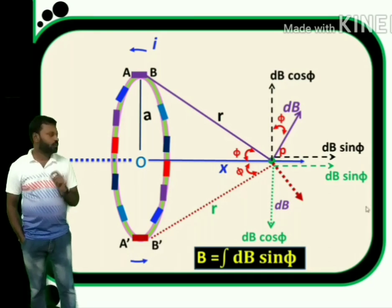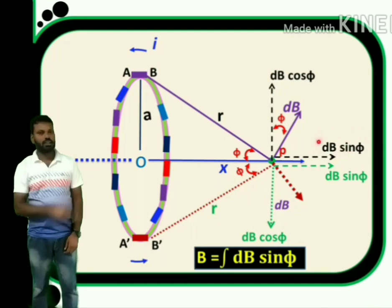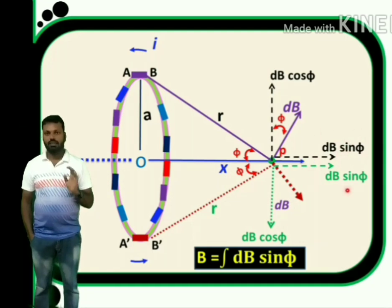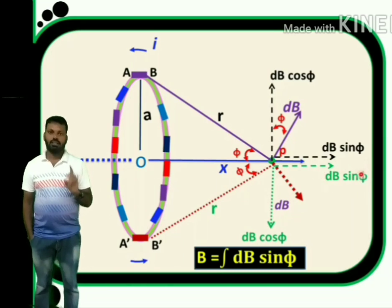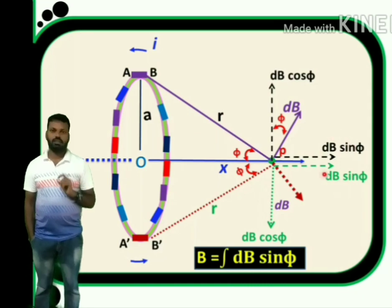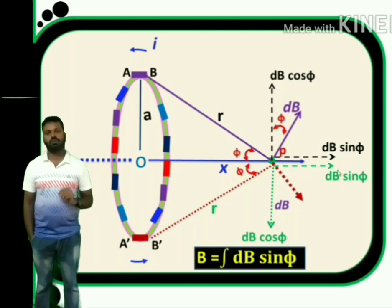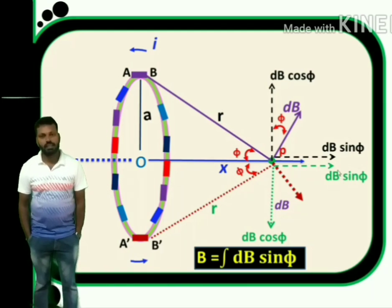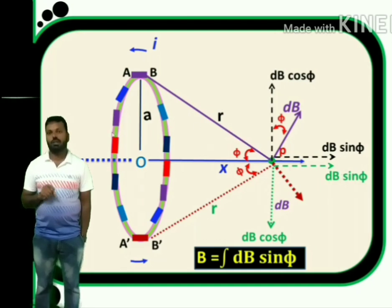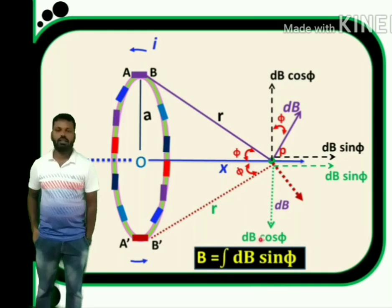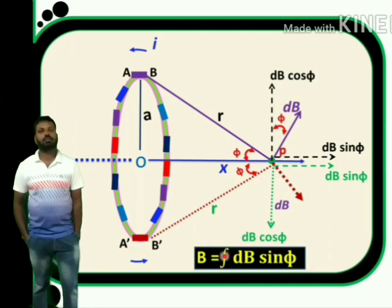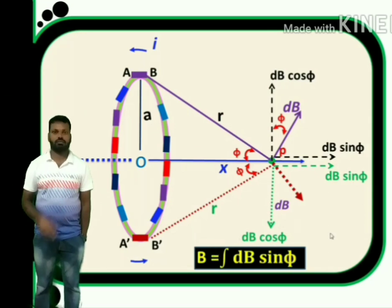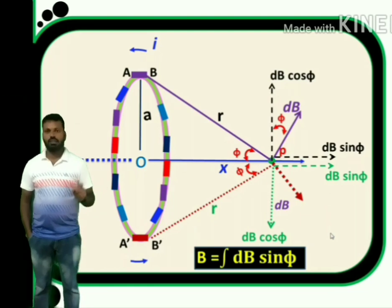Now, the sin phi component of AB is along the positive x direction, and the sin phi component of A'B' is also along the same x direction — both along the same direction, so they add up. For any element on this circular coil, all sin phi components are along the same direction. So total magnetic field B = ∫dB sin phi, which means integration — adding all sin phi components.